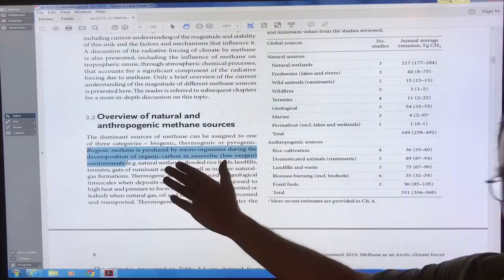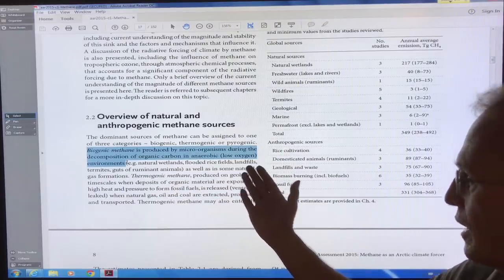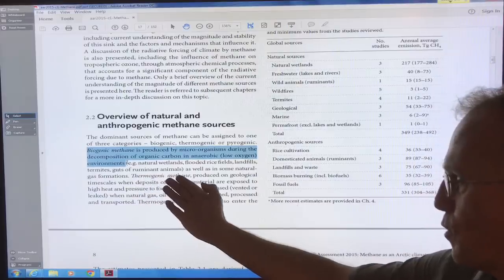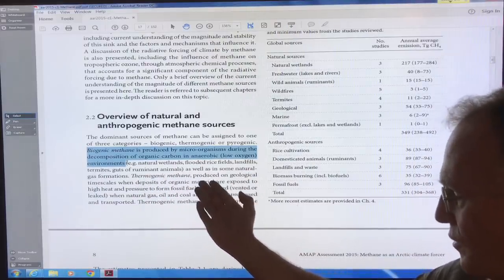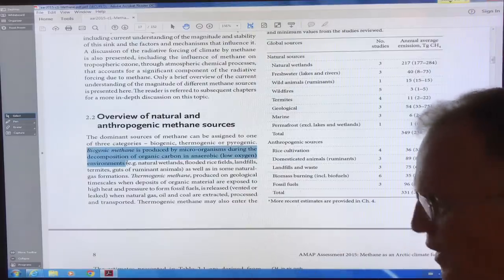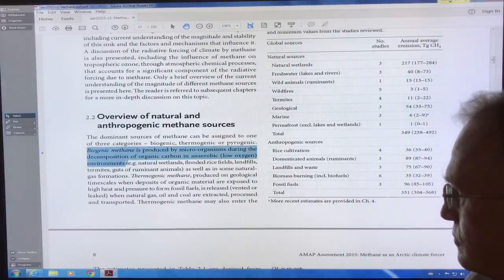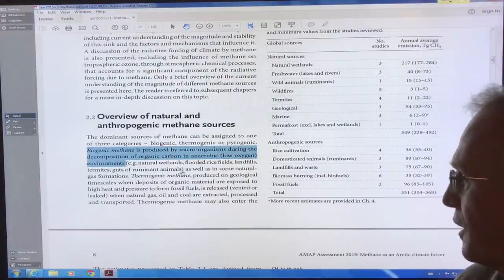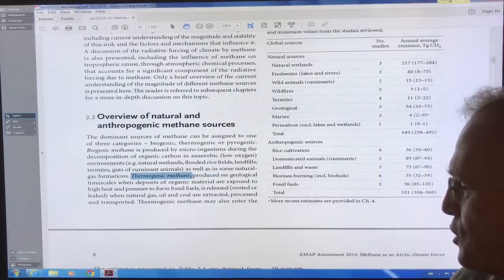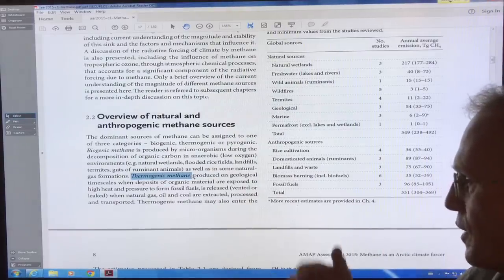So that's like wetlands, flooded rice fields, landfills, termites, the guts of ruminant animals like cows. Most of the methane from cows is coming out of its mouth from burping, not from its other extremity as people generally think. Some comes from the other extremity, but most is from the, it comes out through the chewing and the gas is released from the mouth.